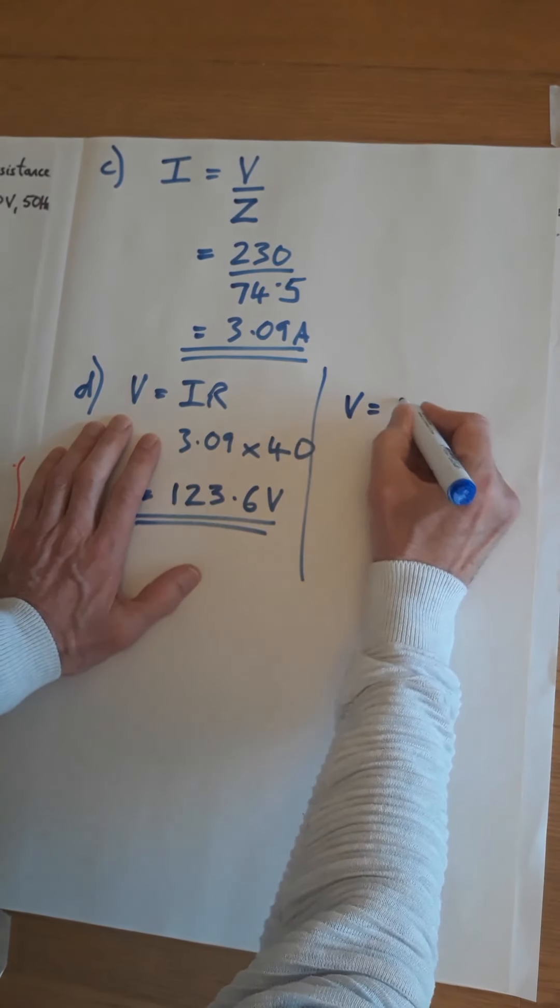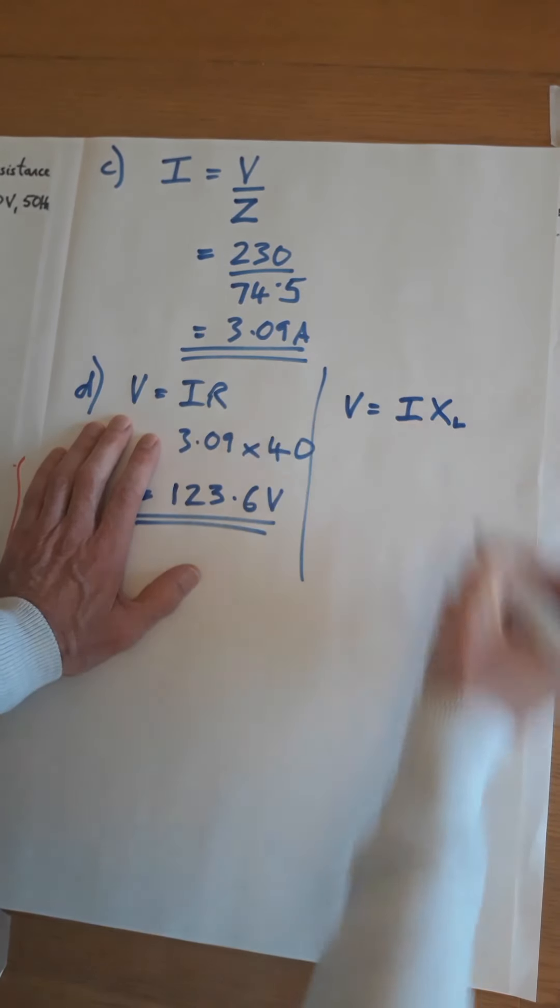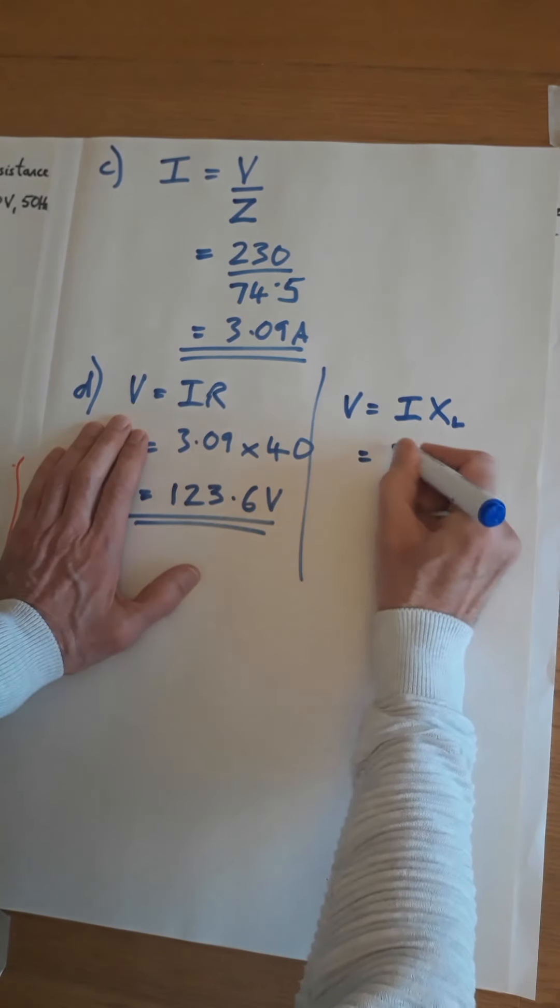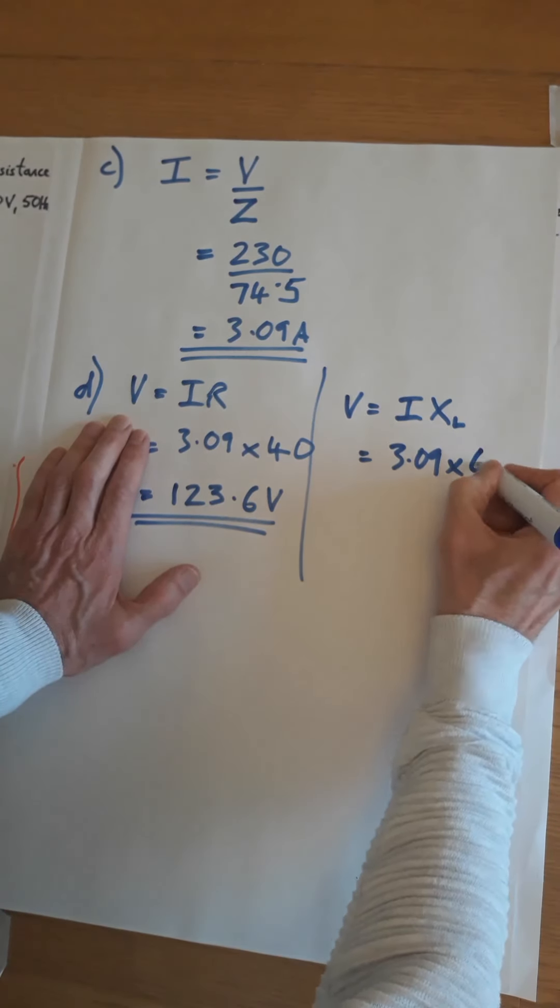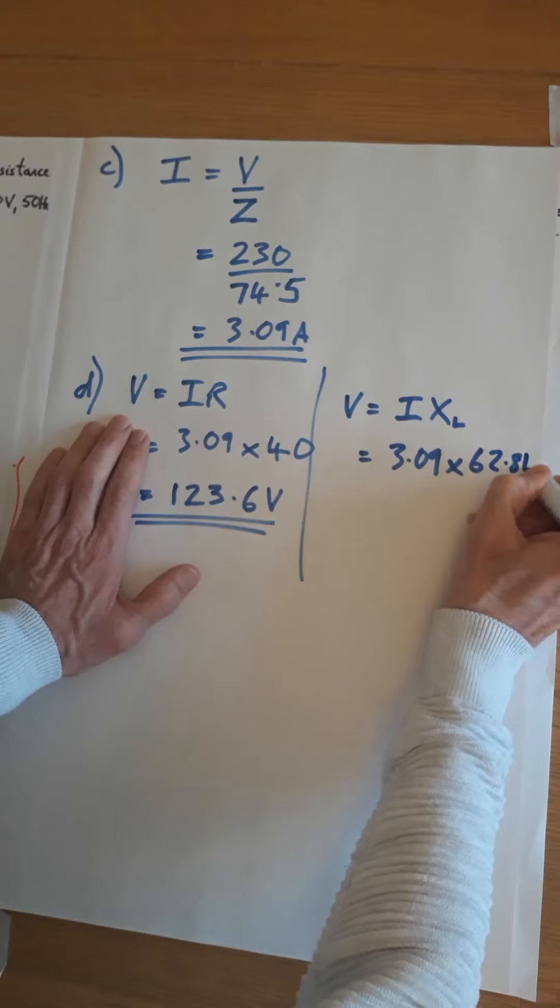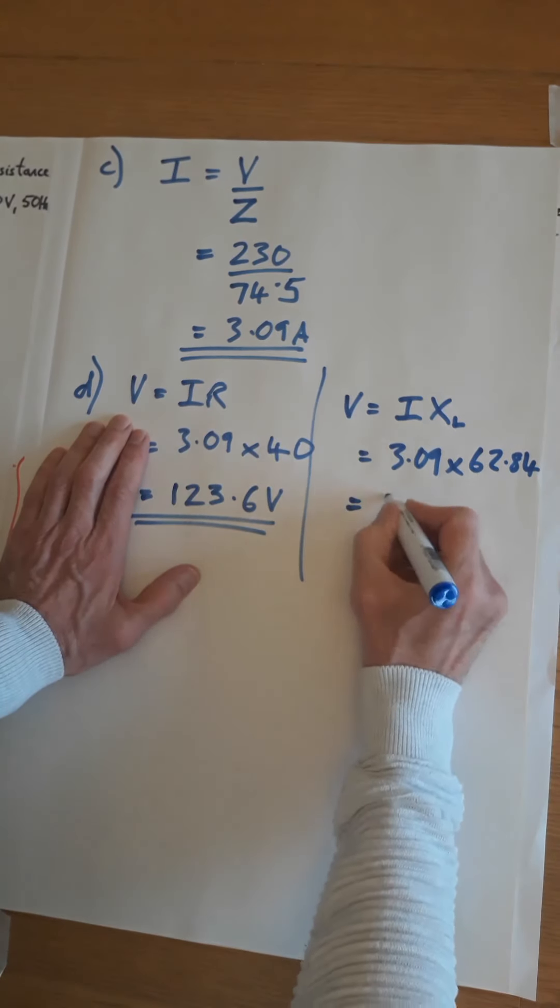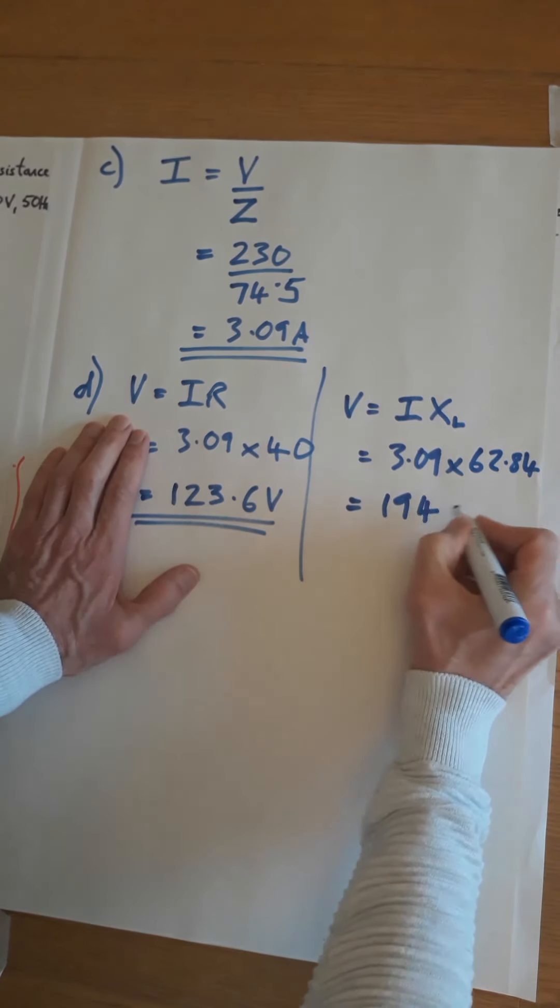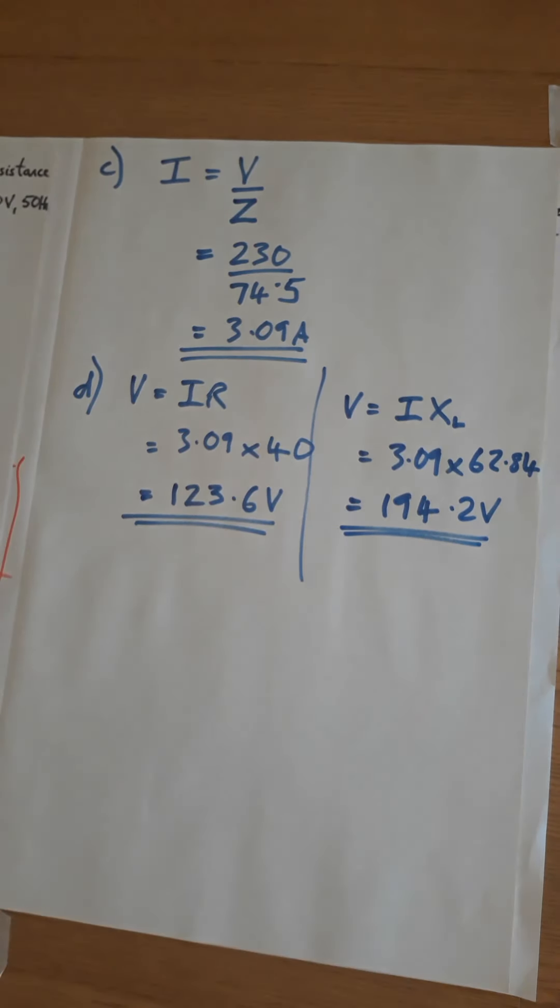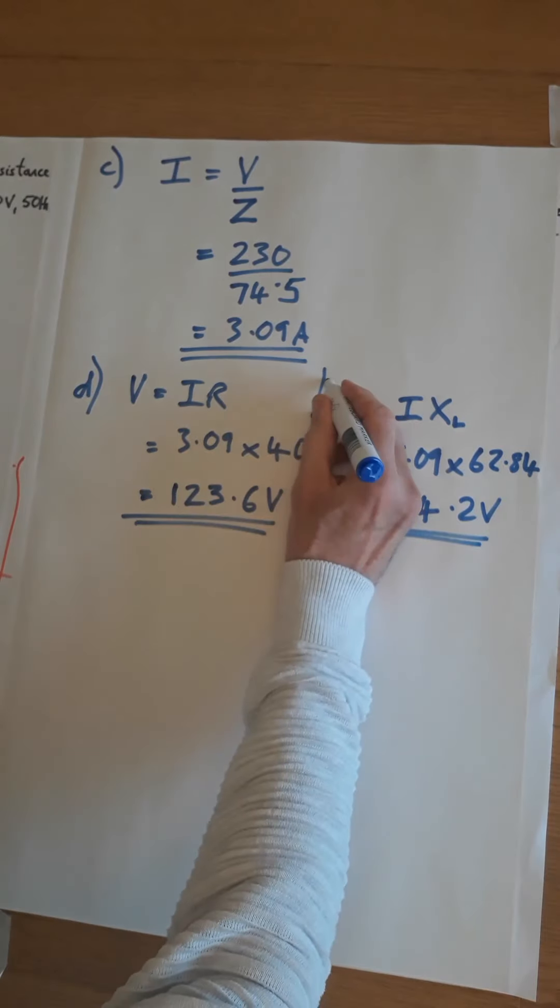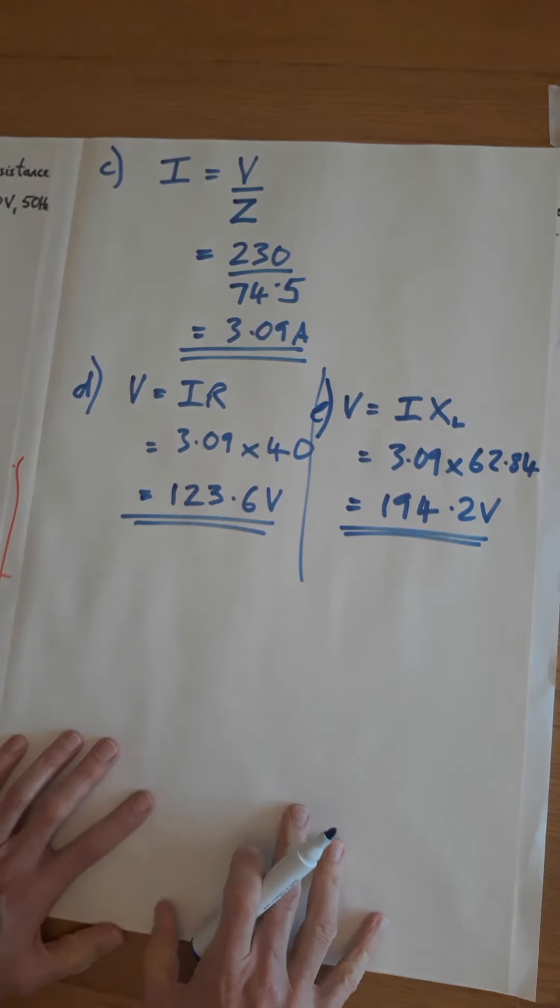Voltage across the inductor. V equals I XL. So the current was 3.09, XL was 62.84, and that's going to give you 194.2 volts. That was part E.